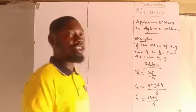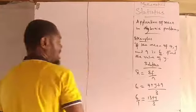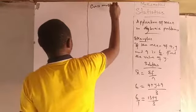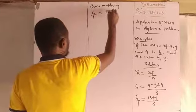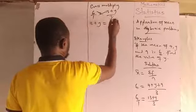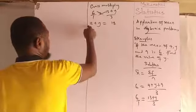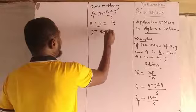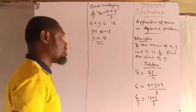From this point, we cross multiply. Expressing 6 as a fraction: 6 over 1 equals 13 plus y all over 3. Cross multiplying gives us 13 plus y equals 18. Moving 13 to the other side: y equals 18 minus 13, so y equals 5.